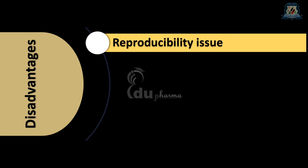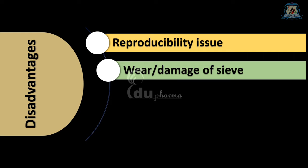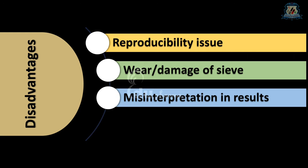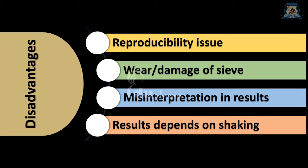Disadvantages include known problems of reproducibility, and wear or damage of the sieve while using or cleaning. There may be chances of misinterpretation in results, as irregular and agglomerated particles cause misinterpretation. Also, rod-like particles may be overestimated as undersized, and during shaking, attrition occurs causing size reduction of particles, leading to errors in estimation. Moisture may create problems like clogging of the meshes, leading to improper sieving. Additionally, the duration of shaking may alter the result.